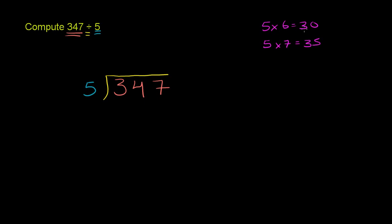So it goes into 34 six times, because if we went with 7, we would've gotten 35—that's too big. So 5 goes into 34 six times. 6 times 5 is 30. We saw that right over there. And we subtract.